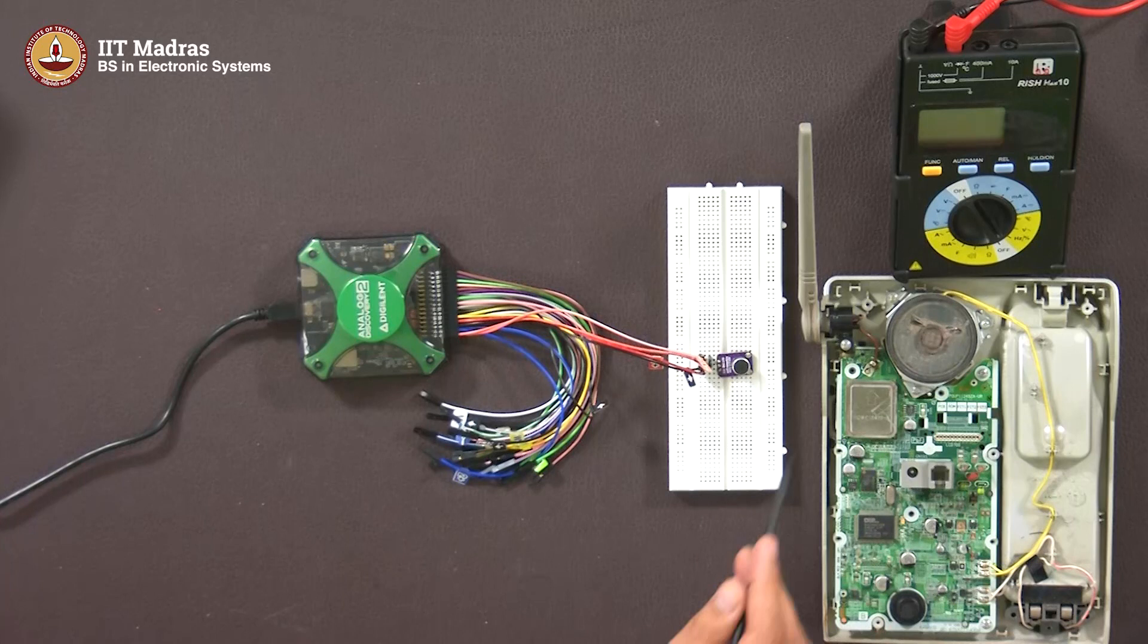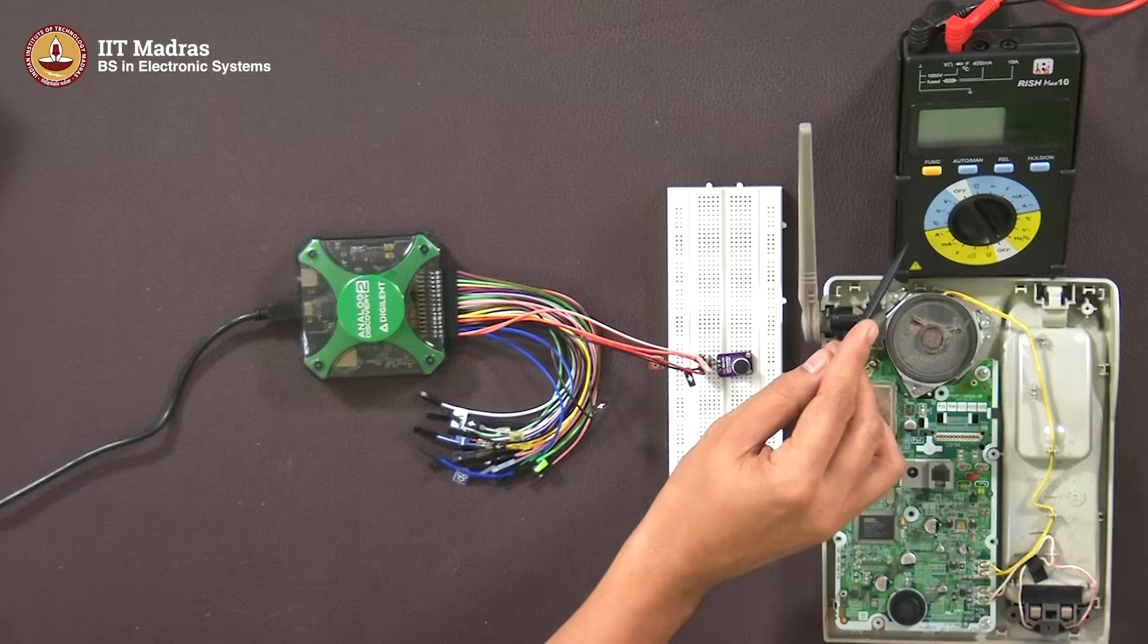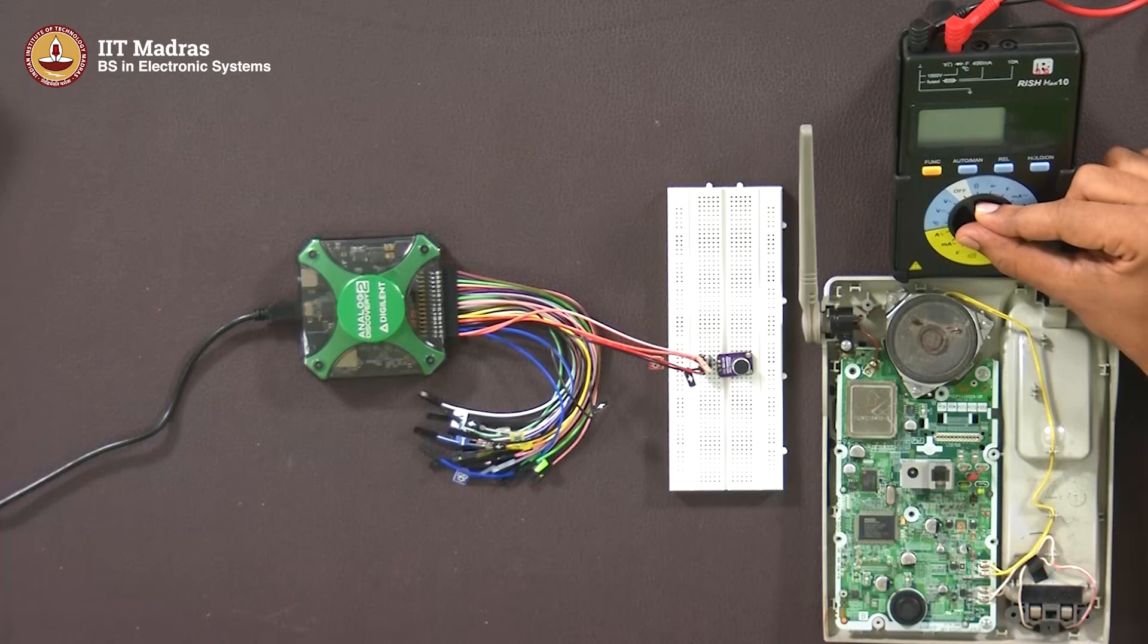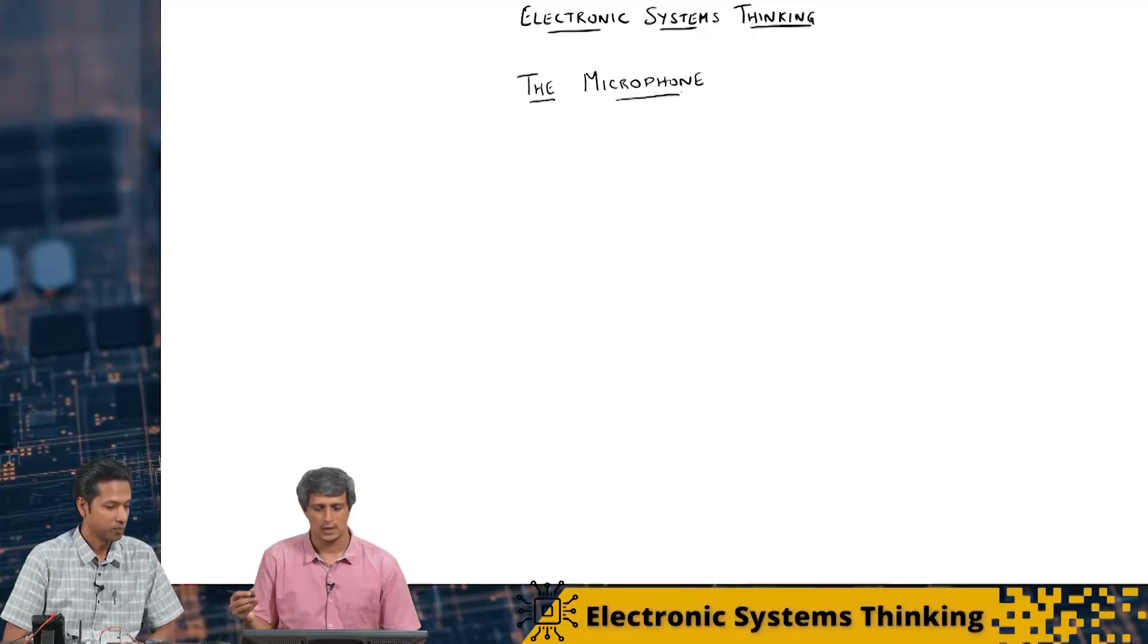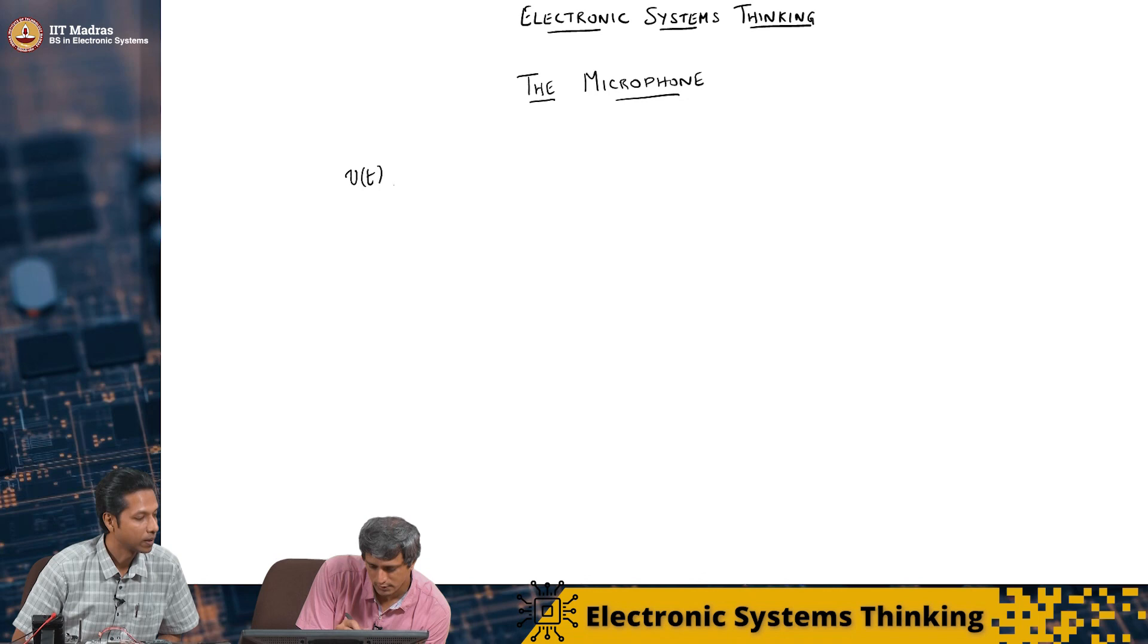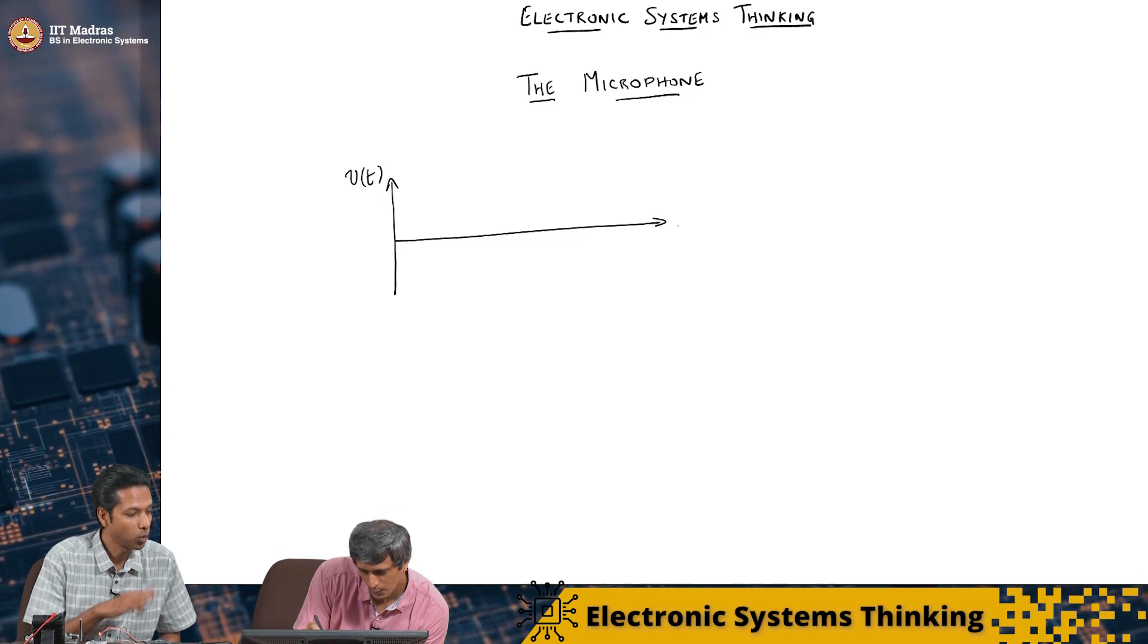So last lecture you remember, we were trying to analyze this particular system and this was the mic and we tried to connect this voltmeter to the two probes behind. But we couldn't make any measurement because this was showing the DC measurement. We put it in the DC mode and this was showing a DC output and that was not useful to analyze a time varying waveform. So if you look at this, what we have now is V of t as a function of time. So it is a voltage that is changing with respect to time.